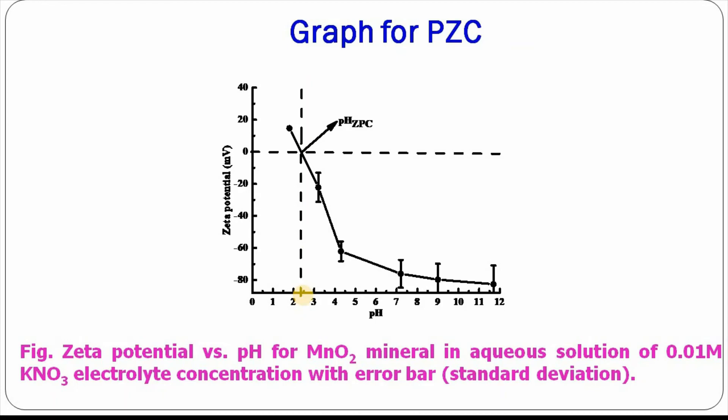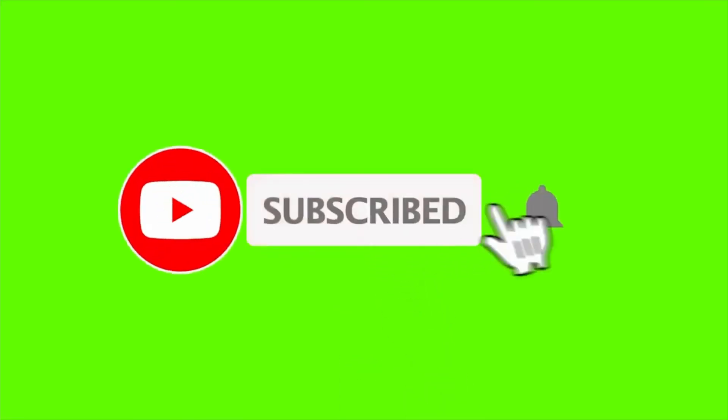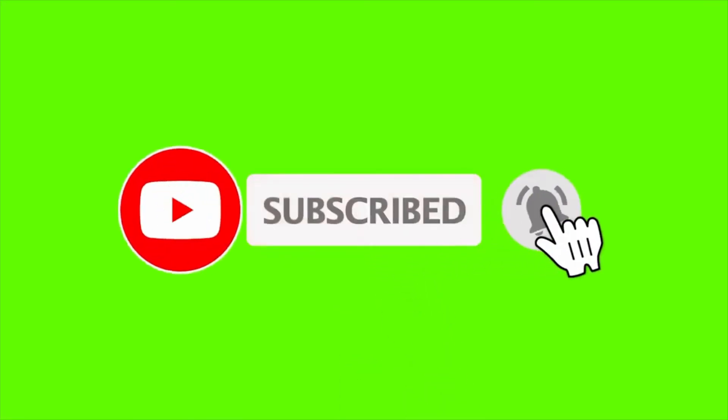Therefore, the point of zero charge for manganese dioxide was 2.5. This is how we can easily carry out a zeta potential measurement experiment for the determination of point of zero charge. Thanks for watching — I'll see you next time. Bye.